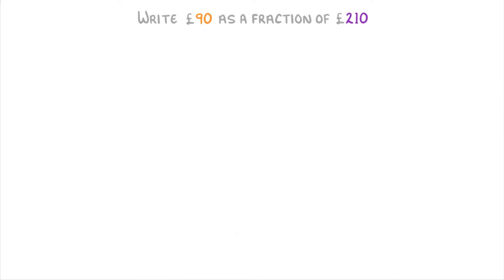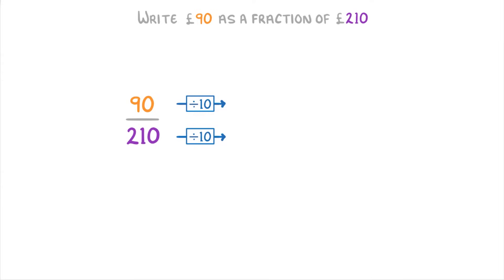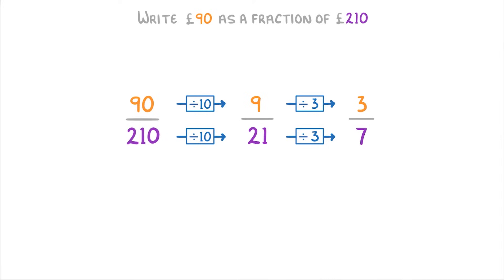So here we do 90 over 210, and then simplify it by dividing top and bottom by 10 to get 9 over 21, and then by 3 to get 3 over 7. So 90 pounds is 3 sevenths of 210 pounds.